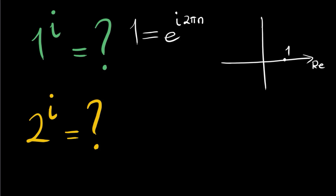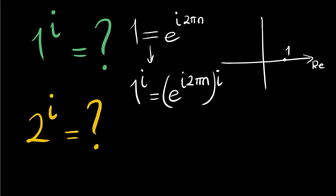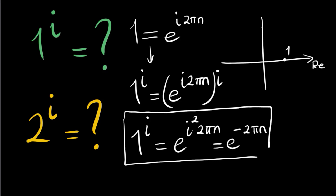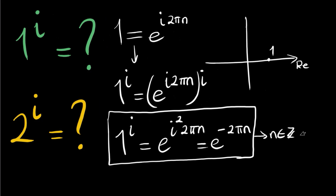So one to the power i is equal to e to the power i times two pi n, raised to the power i. This equals e to the power i squared times two pi n, which is e to the power negative two pi n, for n being any integer. So one to the power i equals e to the negative two pi n.